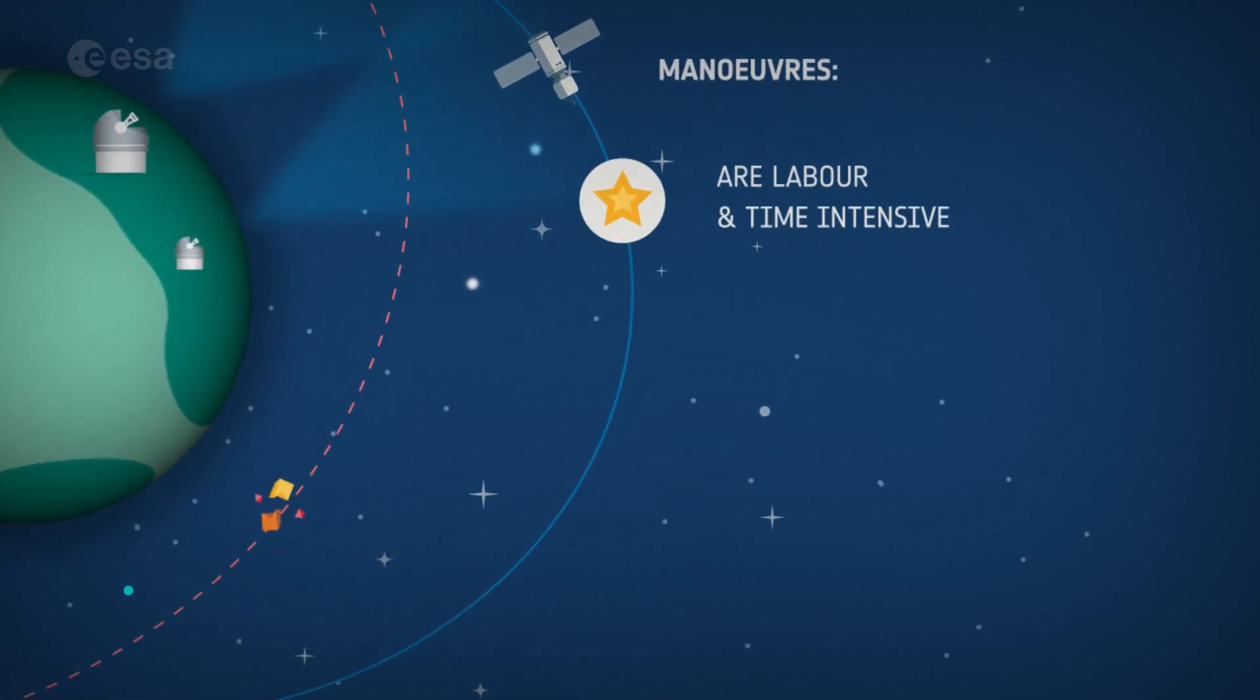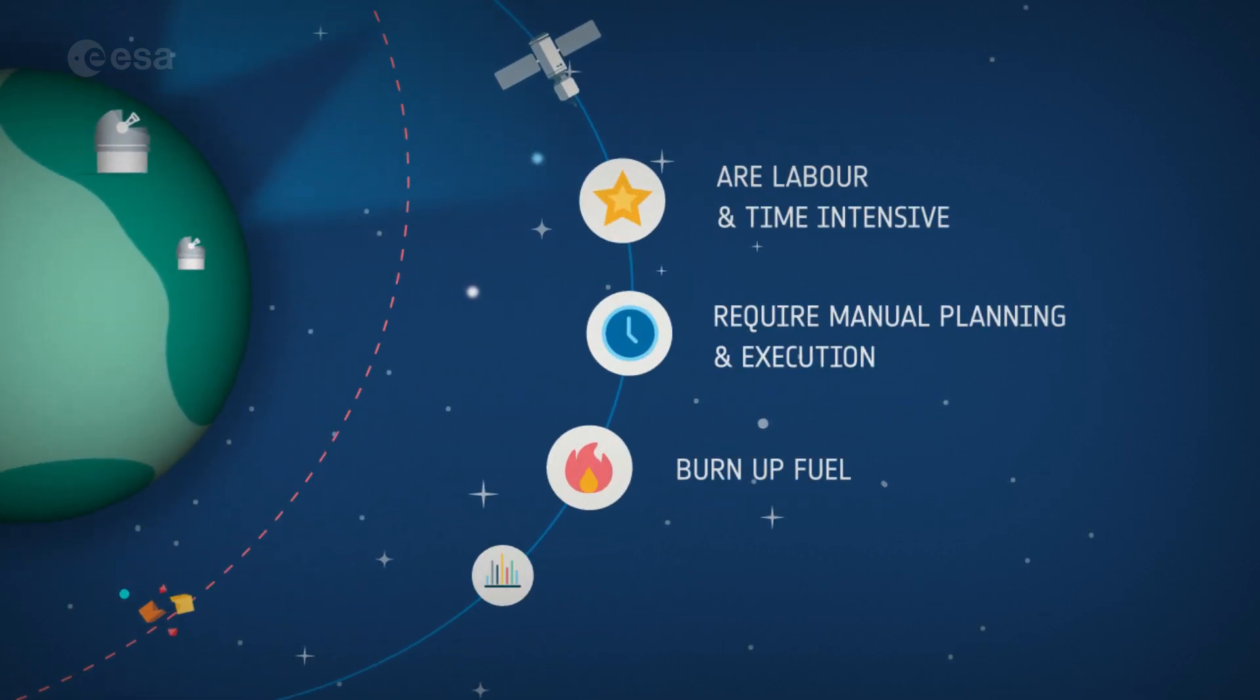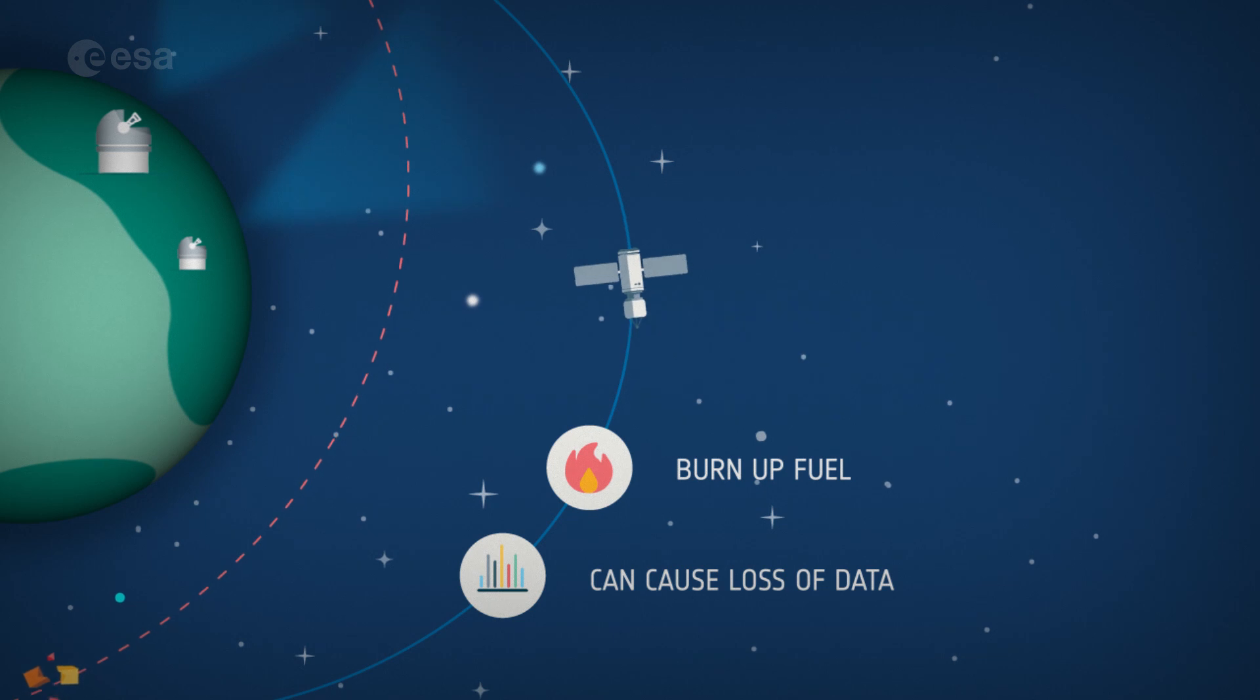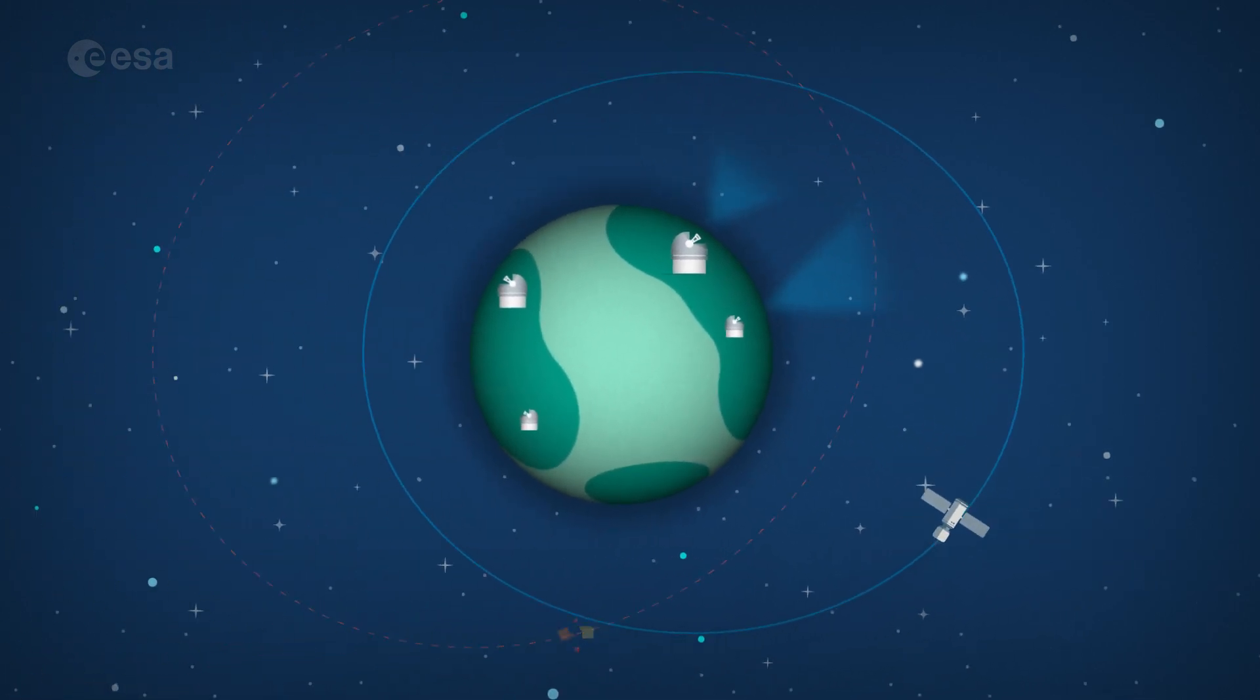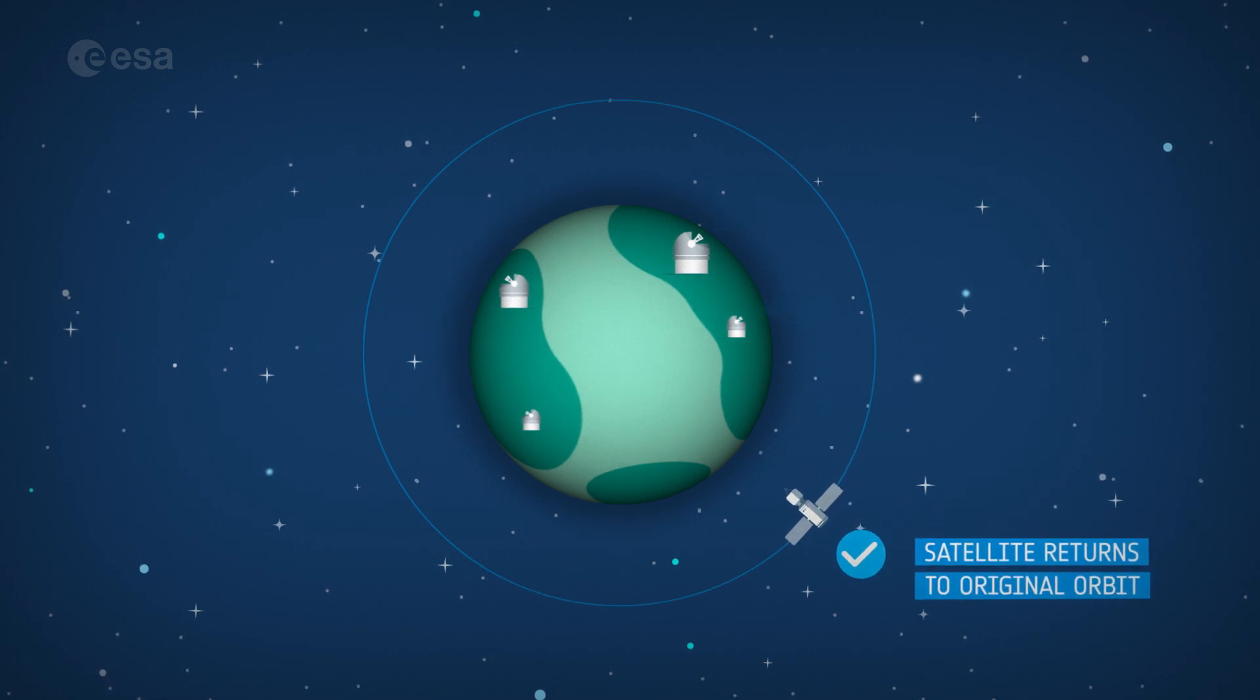The satellite's instruments are often switched off during a manoeuvre, which means important data can't be collected. After safely avoiding the debris, the satellite returns to its original orbit.